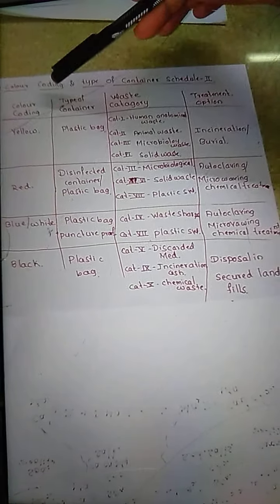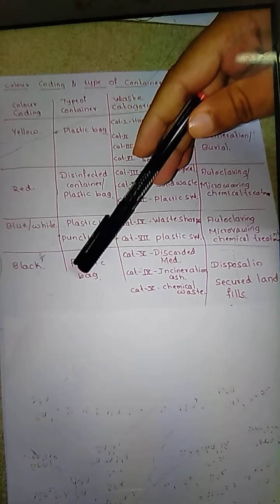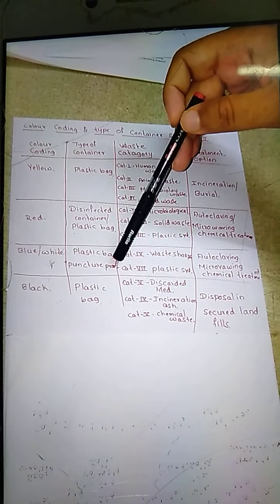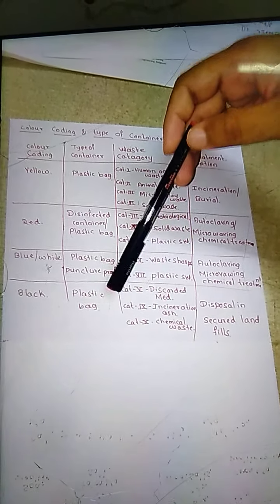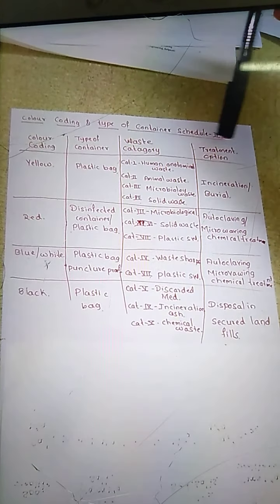In color coding we are going to use four types of colors: yellow, red, blue or white, and black. The different types of containers we are going to use are plastic bags, disinfected containers or plastic bags, puncture-proof bags, and again plastic bags. We have already discussed the categories and their treatment.